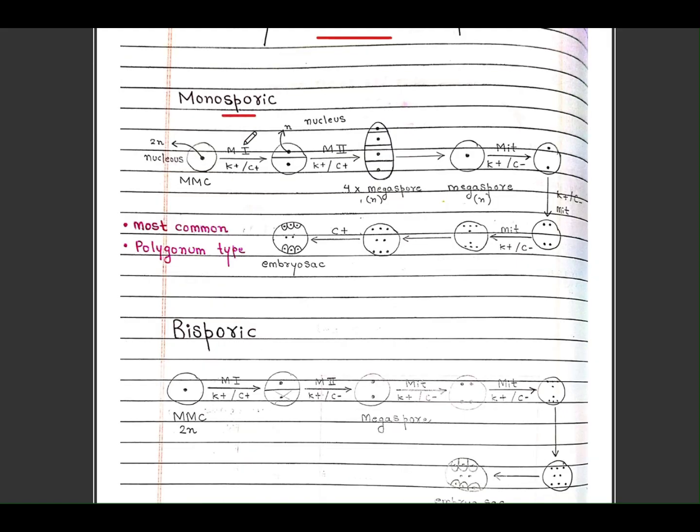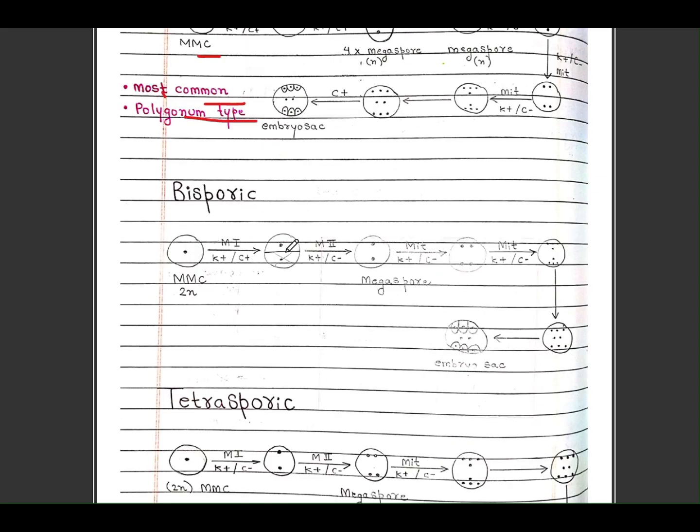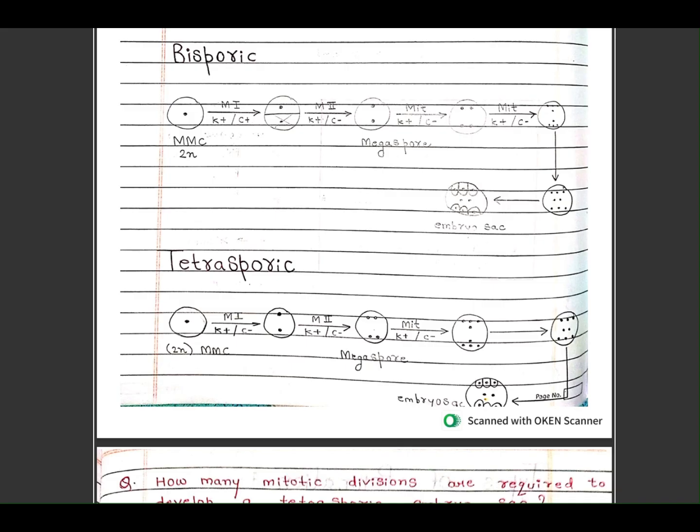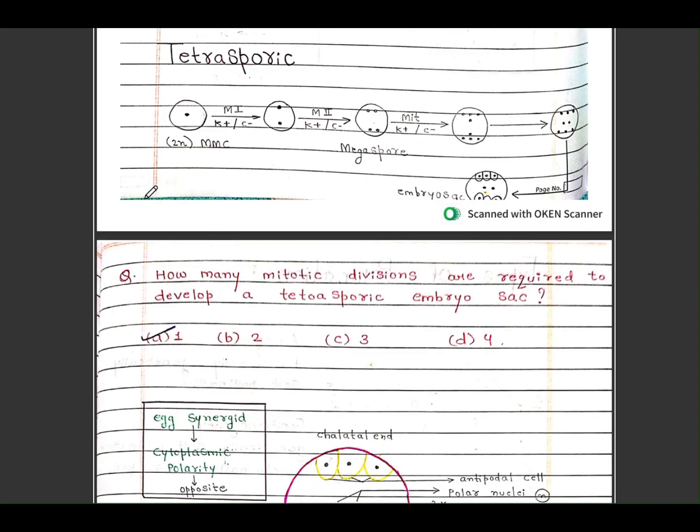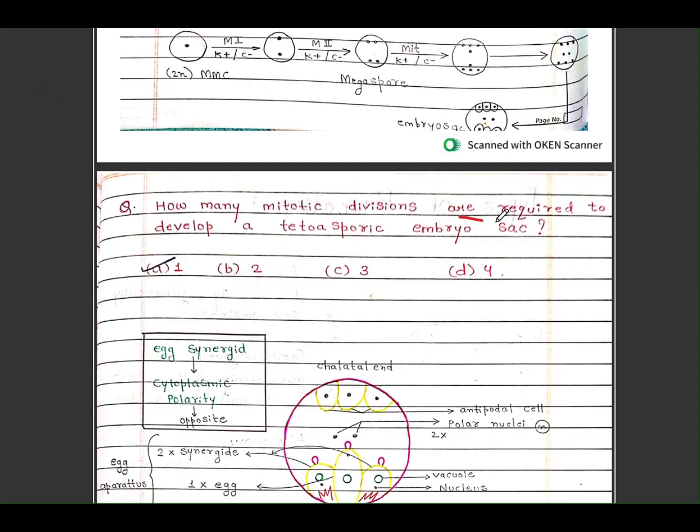Monosporic: megaspore mother cell undergoes meiosis then mitosis. Most common is Polygonum type. Also bisporic and tetrasporic types. Question: How many mitotic divisions are required for development of tetrasporic embryo sac? Answer is 1.